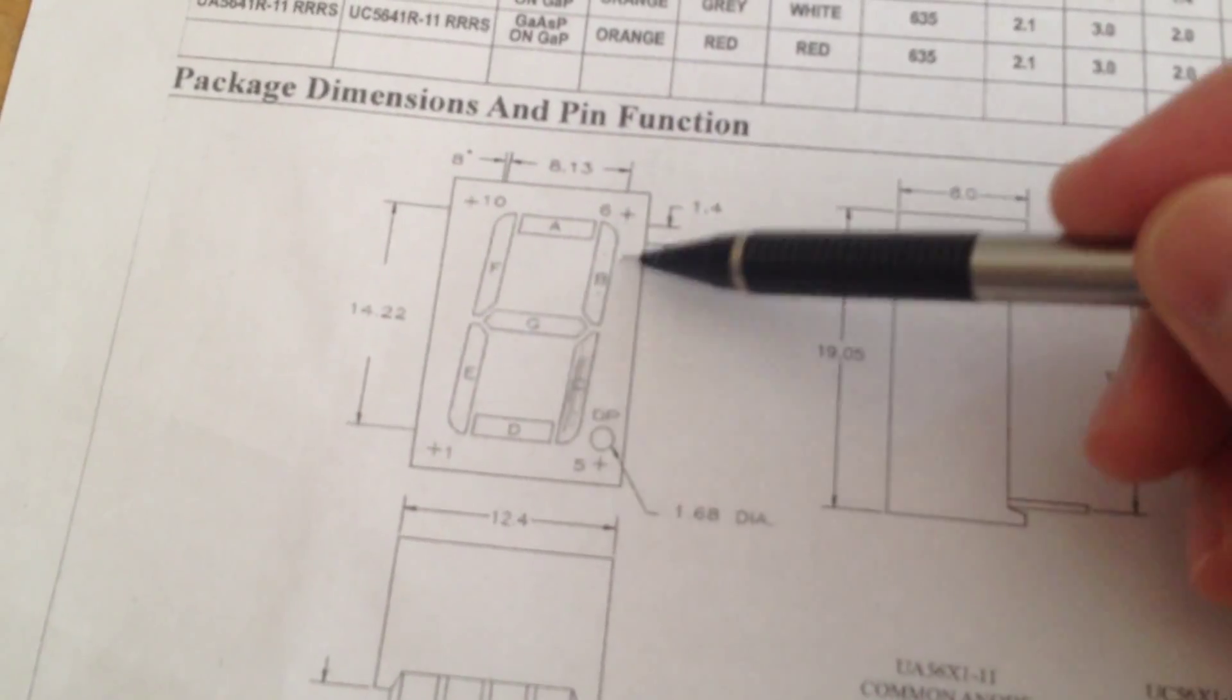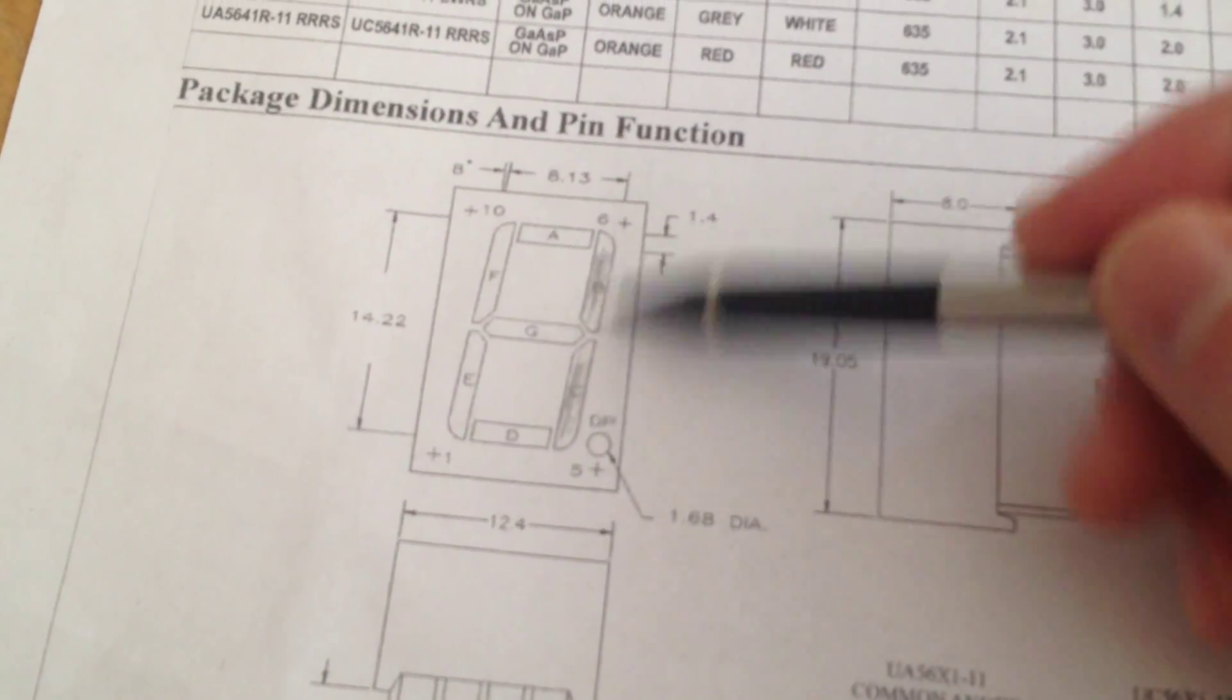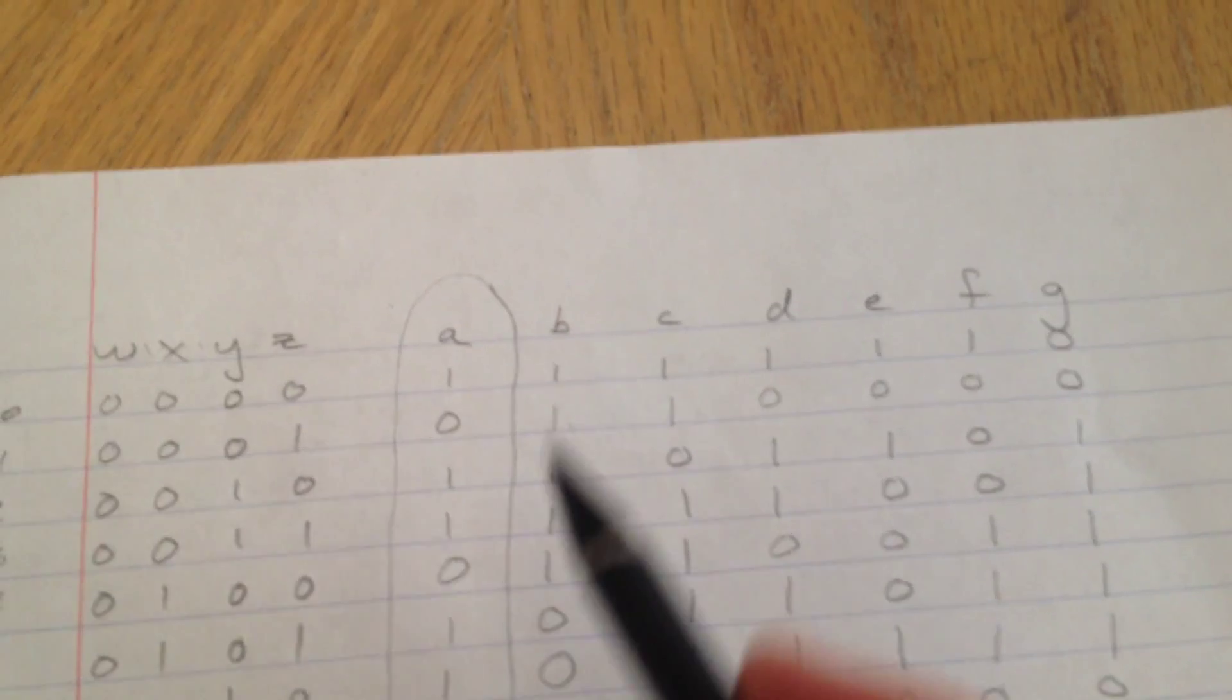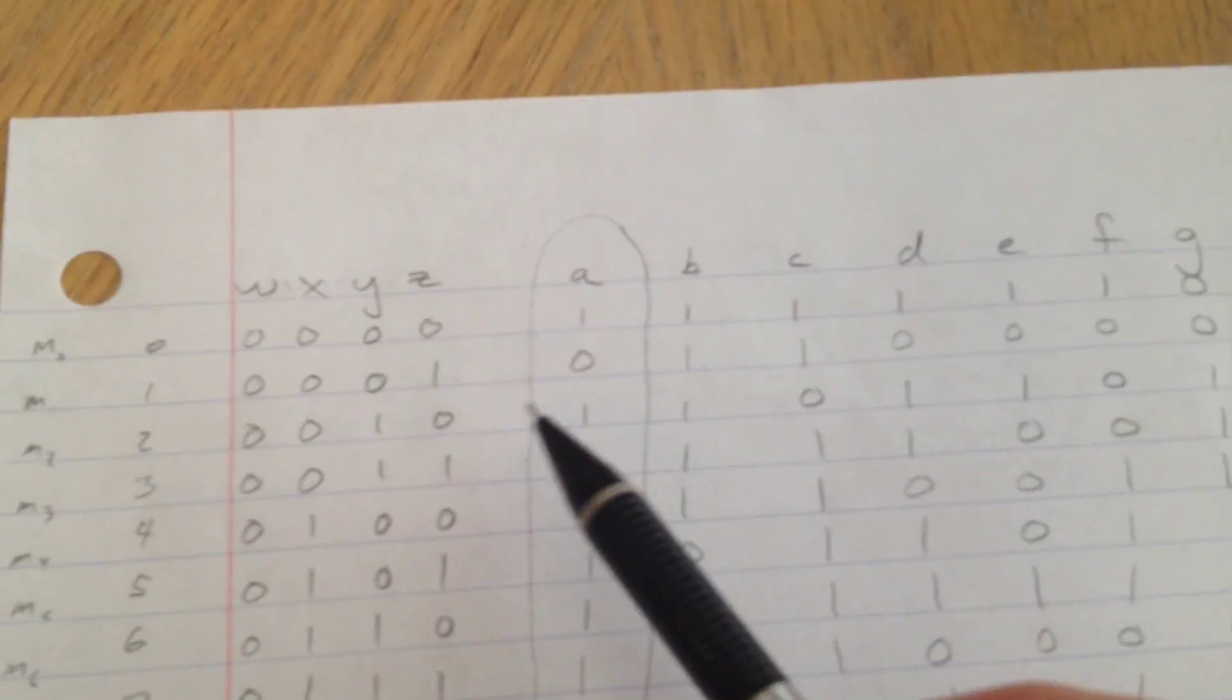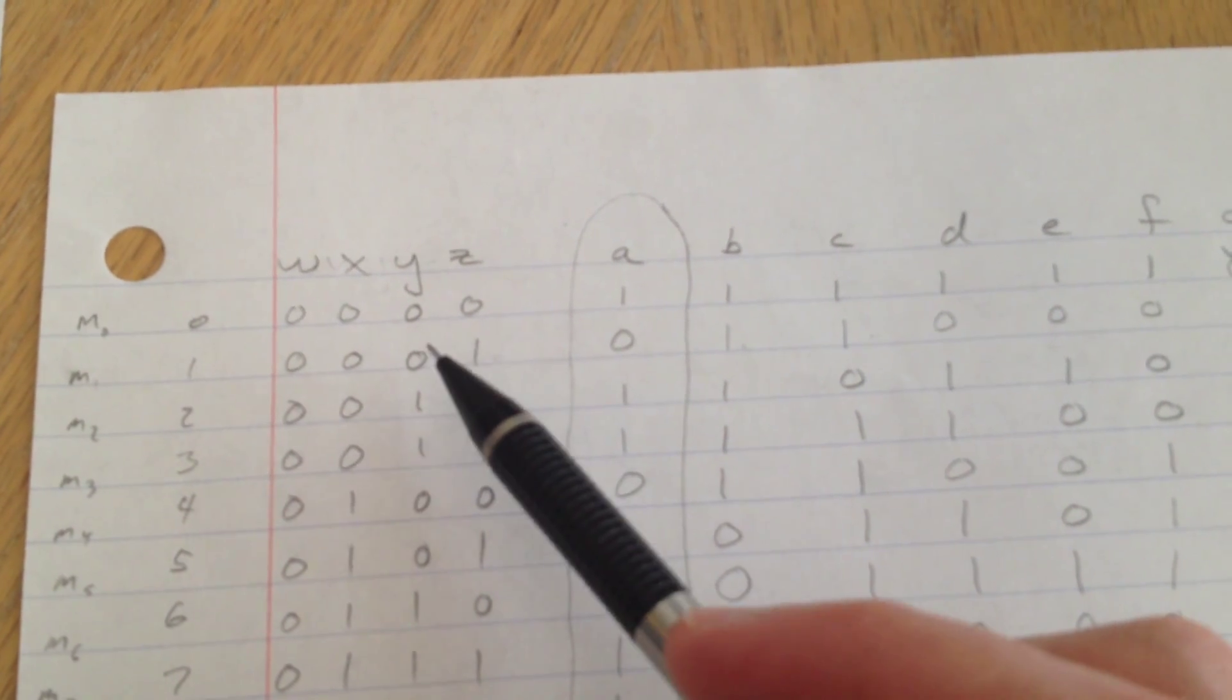So you can just kind of shade that in. That needs to be illuminated when you want to display the number one. Let's go back to our map here. So everything else needs to be zeros except for B and C. And that's going to be for the number one displayed on the seven segment.